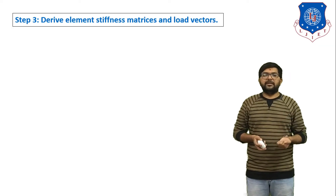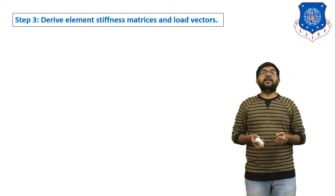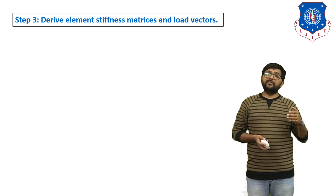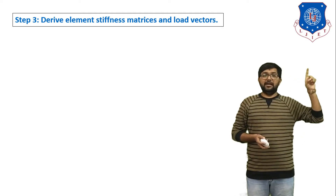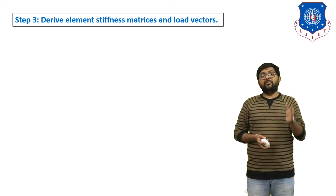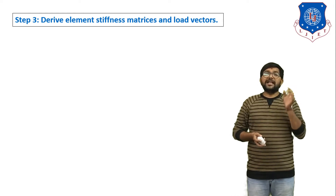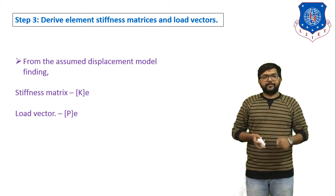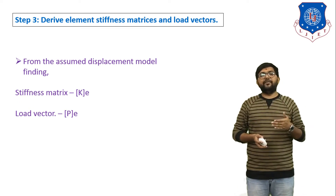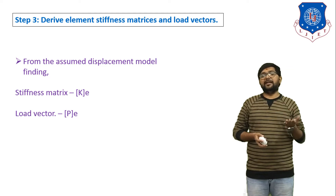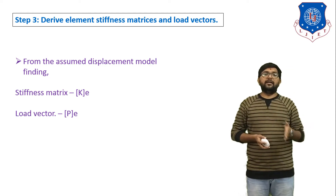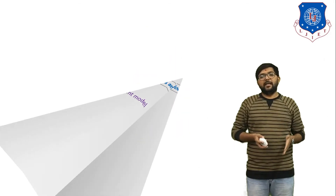Step number three: derive the element stiffness matrix and load vector. We have to derive the element stiffness matrix for each element and derive the load vector, meaning we define the applied force at each node. From the assumed displacement model, we find the stiffness matrix K and the load vector P.